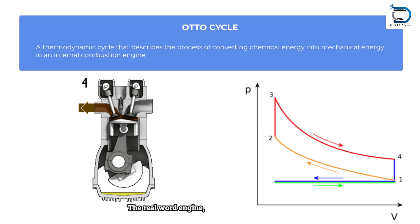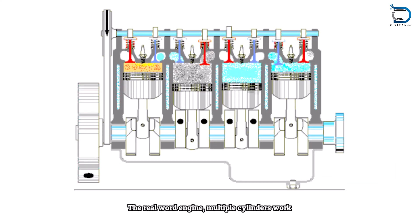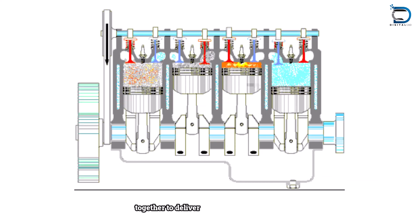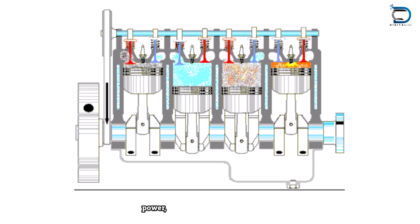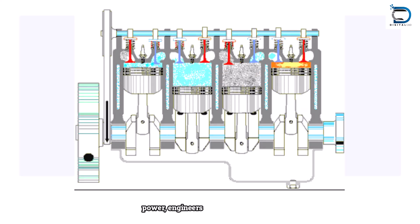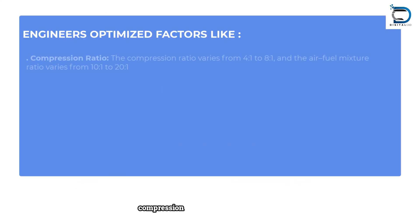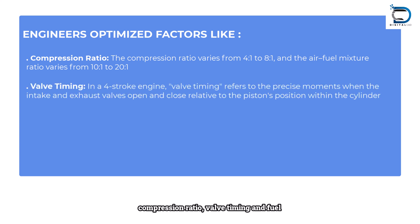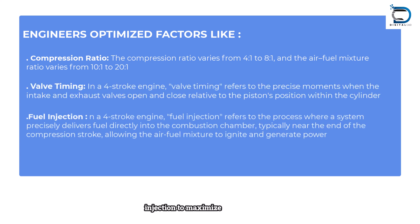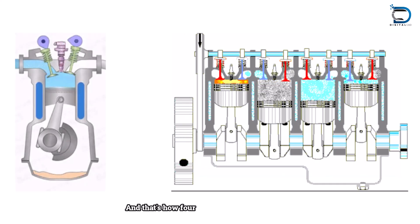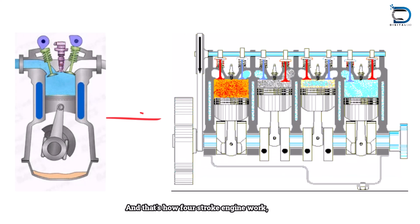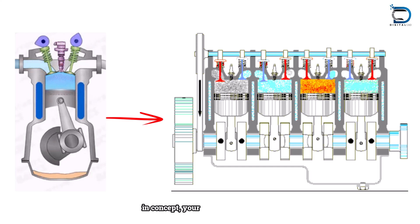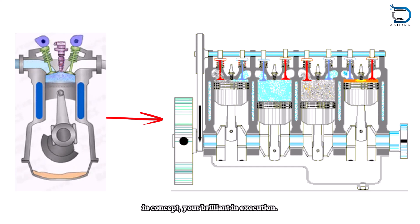In real-world engines, multiple cylinders work together to deliver smooth and continuous power. Engineers optimize factors like compression ratio, valve timing, and fuel injection to maximize efficiency and performance. And that's how four-stroke engines work — simple in concept, yet brilliant in execution.